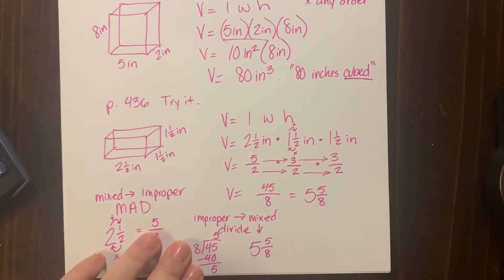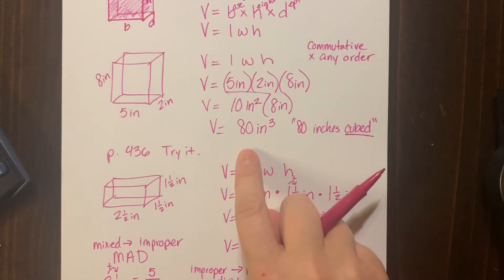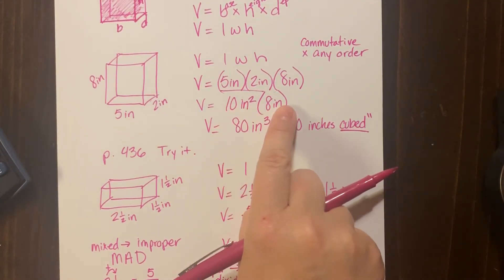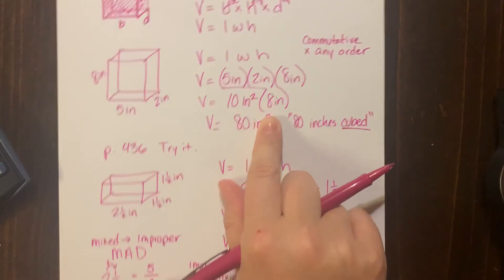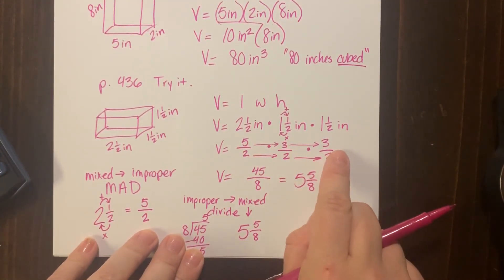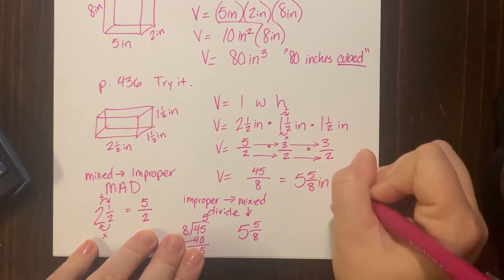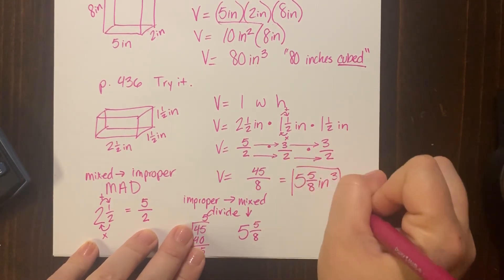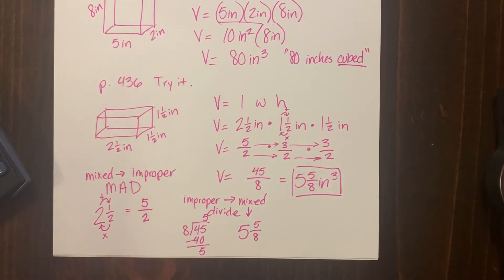Remember, up here we had inches times inches times inches. That gave us inches cubed. Let's look at this one: inches times inches times inches—that is inches cubed. You cannot forget that. That's a measurement. You can't just go without any units at all. All right, we are going to stop there.